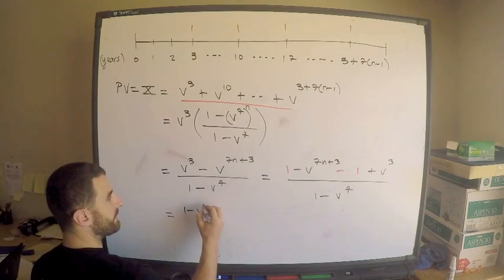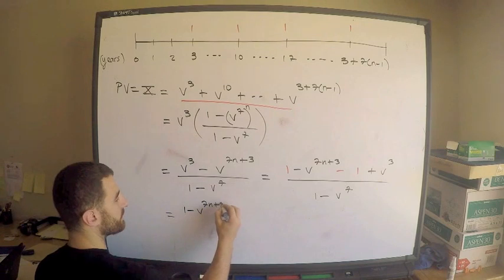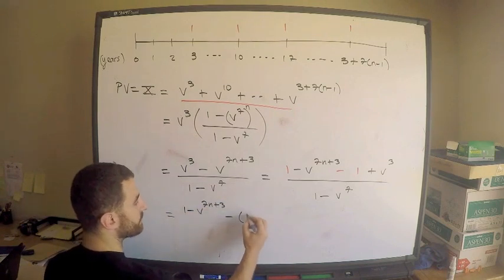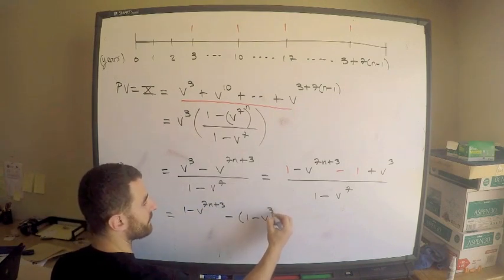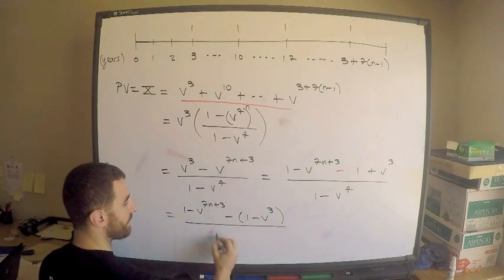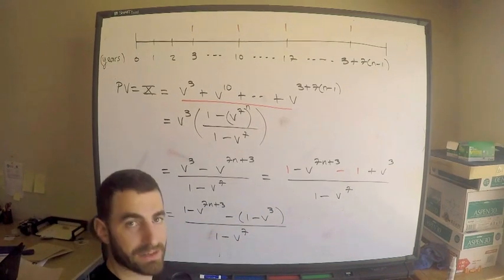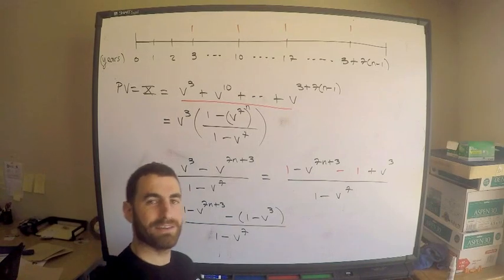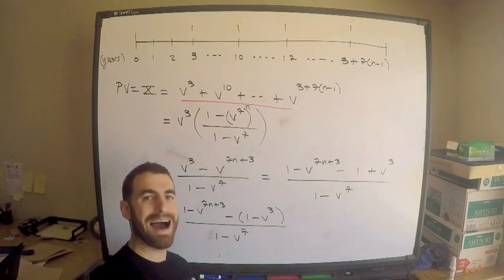Why would I do this? This is equal to one minus v to the 7n plus 3 minus one minus v cubed divided by one minus v to the seven.